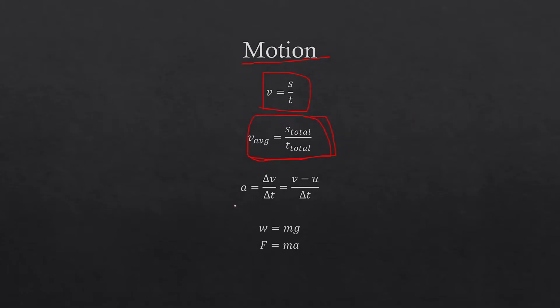Acceleration: a = (v − u) / t. It's the rate at which velocity changes. Mathematically, acceleration is the derivative of velocity with respect to time, and velocity is the derivative of displacement with respect to time. Therefore acceleration is nothing but the second derivative of displacement with respect to time.